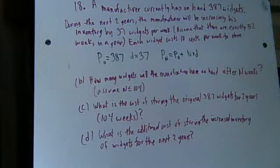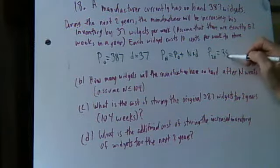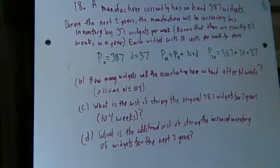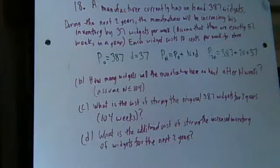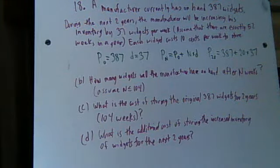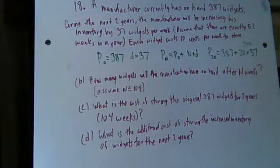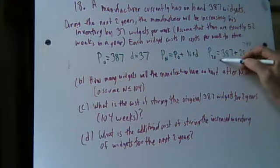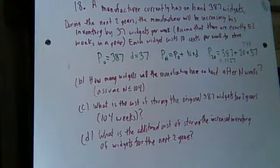So in this case, to get 20 weeks out, we say that P20 is equal to 387 plus 20 times 37. 20 times 37, I'll just use a calculator, is 740. And I add to it 387, and that's equal to 1,127. So that's the answer to A.